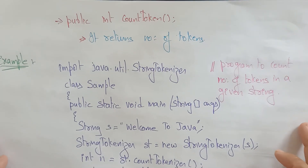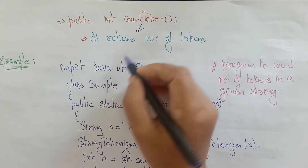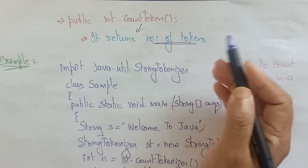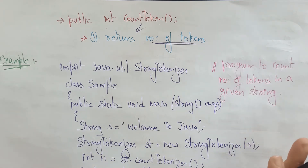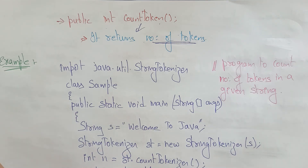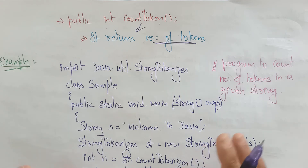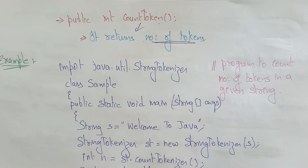One more method I'm using: public int countTokens(). This returns the number of tokens present in the string. So if you want to count how many tokens are there, this method returns that integer count. These are the three methods I've selected from javap for the programs I am explaining.